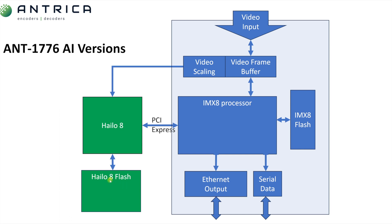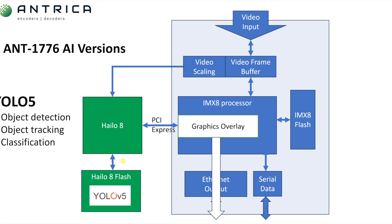The Halo 8 flash is where the program for the Halo 8 resides and it performs whatever AI function has been programmed. We ship this product with a program called YOLO V5. YOLO is an open source AI program which allows for object tracking, object detection, and object classification. So effectively we can track an object, detect that it is moving, and classify what type of object it is — whether it's a car, a person, a cat, a bag, or whatever the classification requirements are. This is the basic block diagram of the ANT1776 AI version.